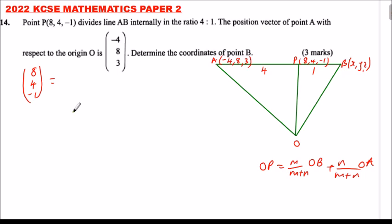So OP we just write it in column form. It equals, now our M is 1, so it is 1 over 5 vector OA. OA we already have, it is minus 4, 8, and 3. We have been given here.